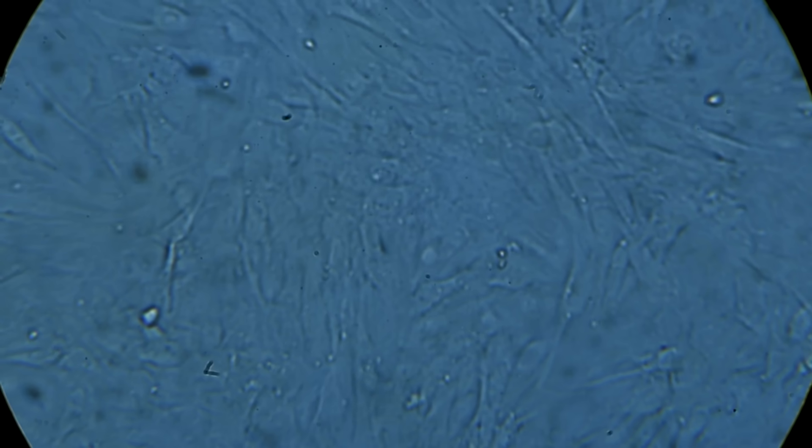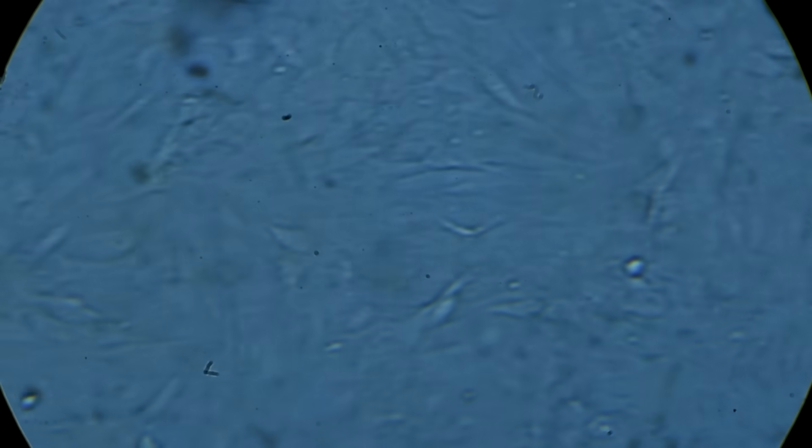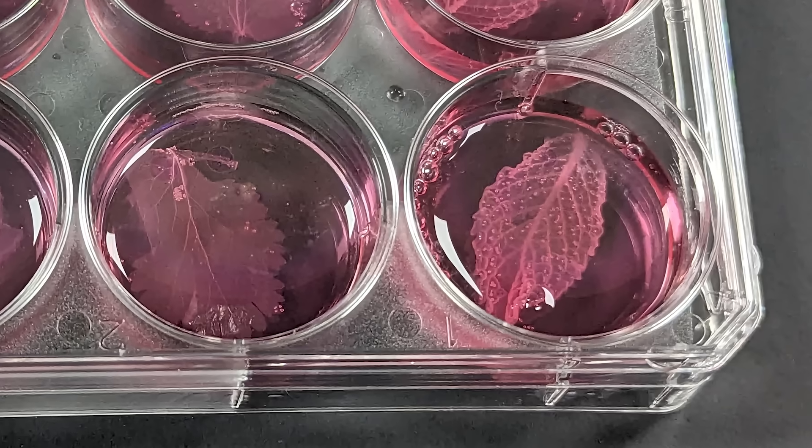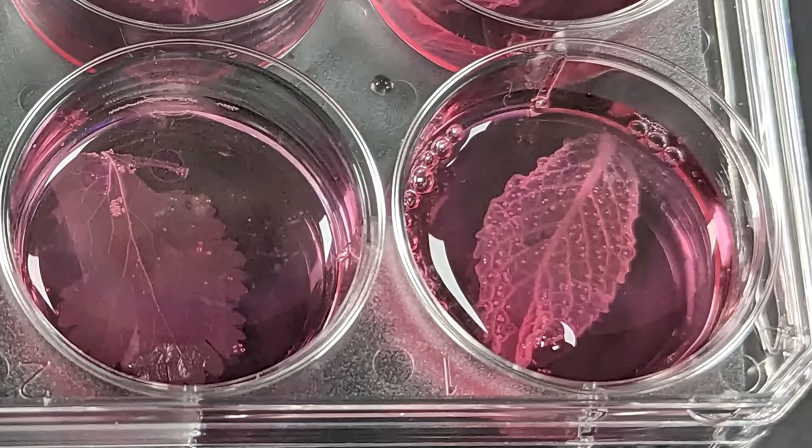Now, since the cells tend to flatten out when they're healthy, and are actually pretty hard to see even when they're on plastic, we're going to need to stain them to see them. That way, we'll know if they've adhered, and if we have a proper meat leaf.